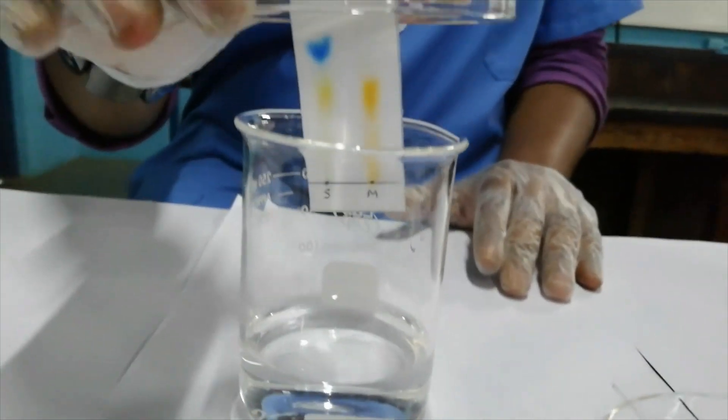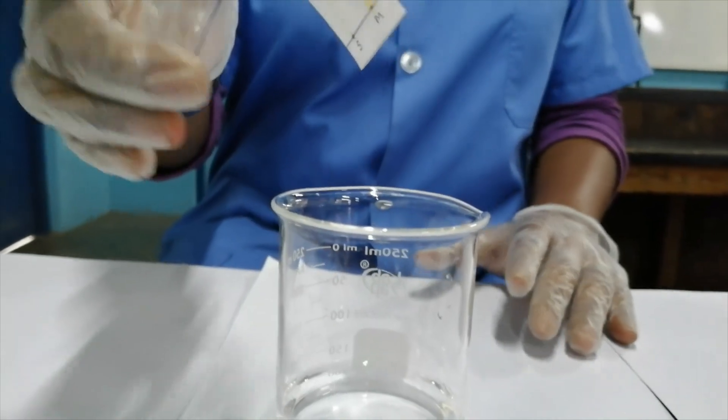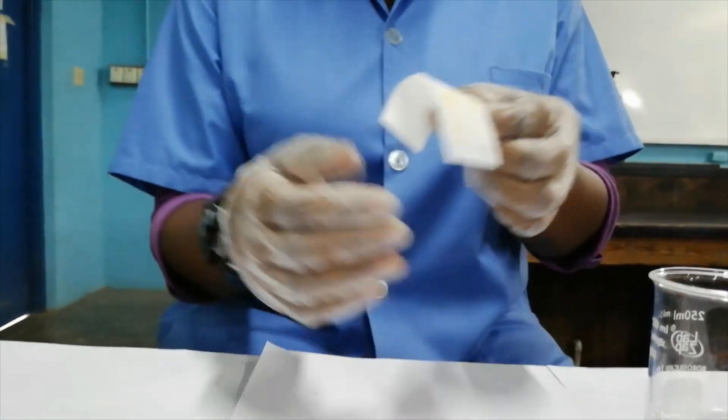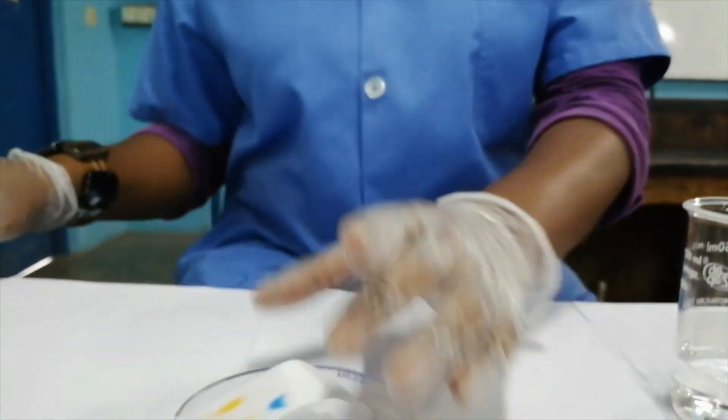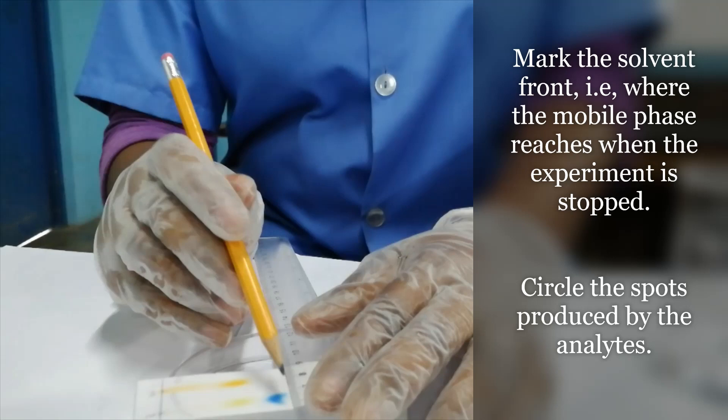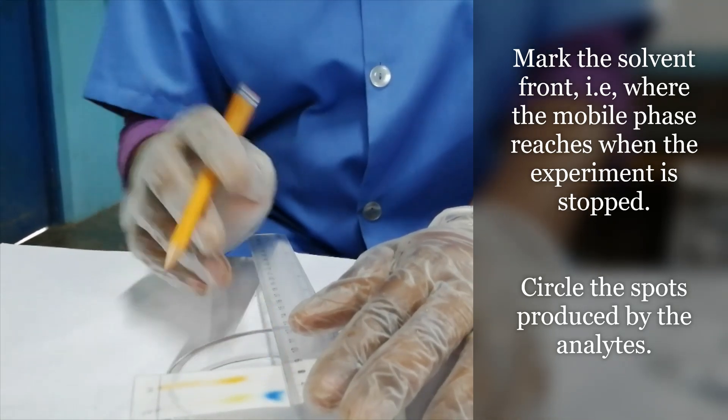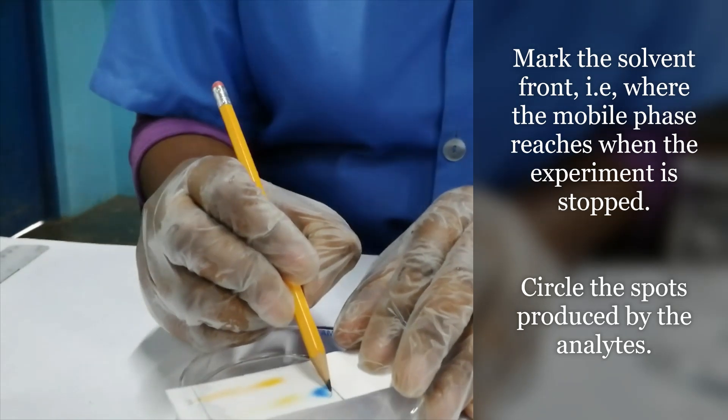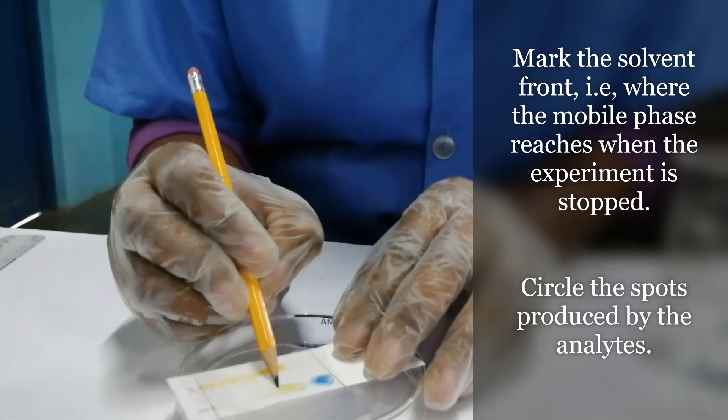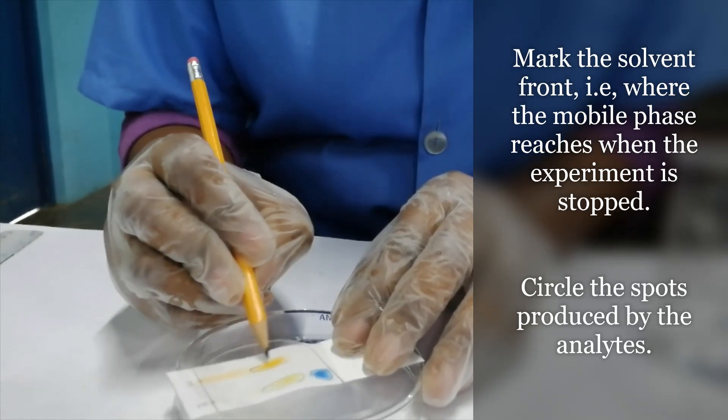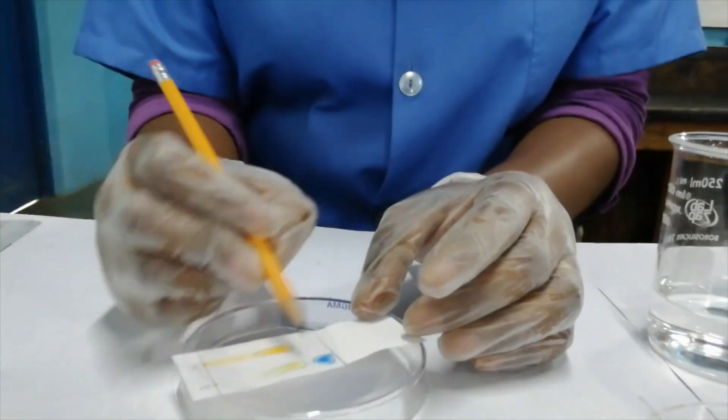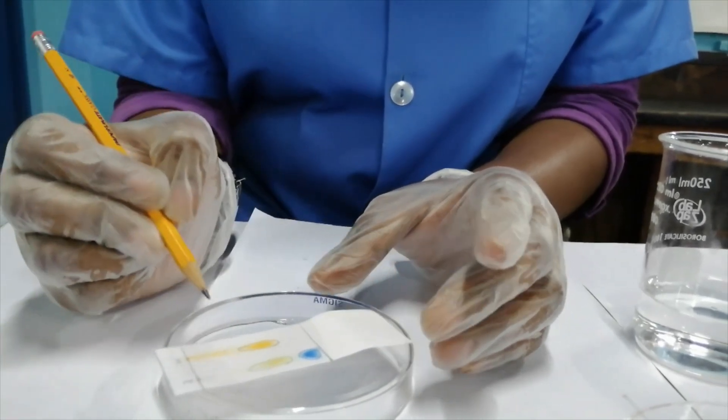I'm going to stop it by removing the filter paper from solution. I need to mark the solvent front. This is where the solvent reaches. I'm going to circle these streaks because once the paper is wet, it is going to continue developing.